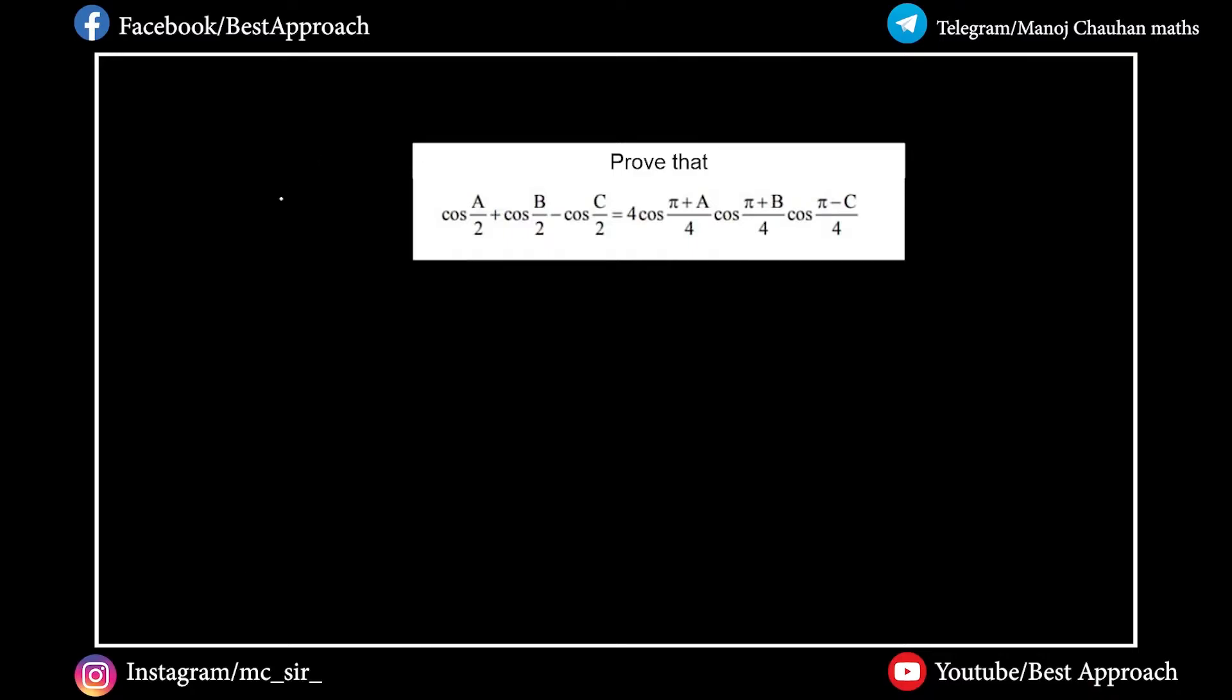Let's take a question. RHS. This gives us 4 cos of pi plus a divided by 4, into cos of pi plus b divided by 4, into cos of pi minus c divided by 4.